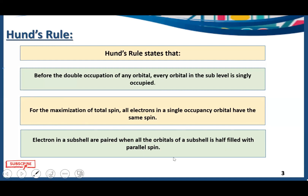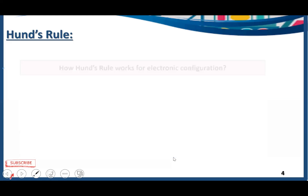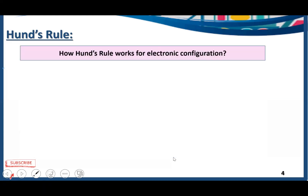Electrons in a subshell are paired only when all the orbitals of that subshell are half-filled with parallel spin — then we can pair them. So Hund's Rule is all about the pairing of electrons: how we need to pair them and how we need to fill them in the orbitals. Hund's Rule is important for finding out the ground state of an atom.